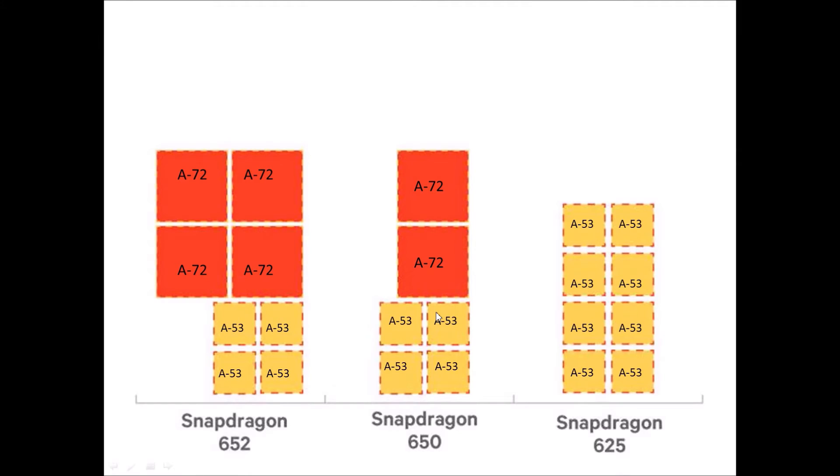Now let's see how Snapdragon 625 is different from Snapdragon 650 and 652. Snapdragon 625 is an octa-core processor with all its cores clocked at 2 GHz, and all the cores are based on ARM Cortex-A53. Now you might be thinking 625 is a poor chipset compared to 650 and 652 because it does not have any core based on ARM Cortex-A72, but the story doesn't end here.